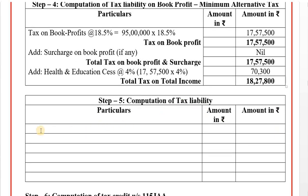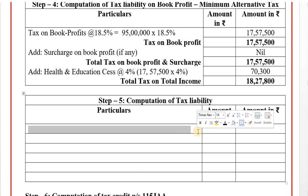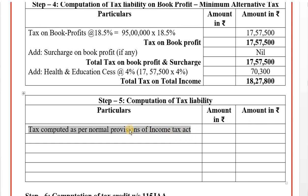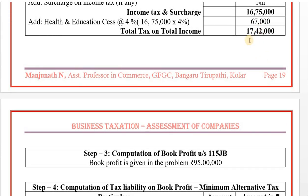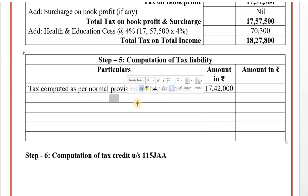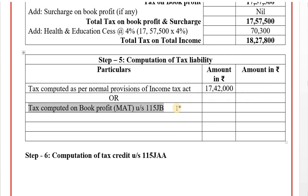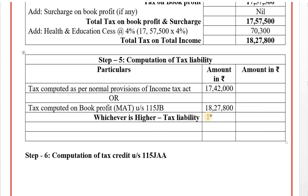Step number 5: Computation of tax liability — compare step 2 (normal provisions tax liability: 17,42,000) with step 4 (book profit tax liability: 18,27,800). Whichever is higher is the tax liability. 18,27,800 is higher, so the tax payable is 18,27,800.